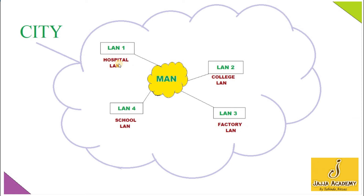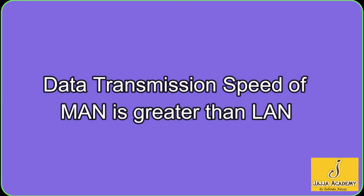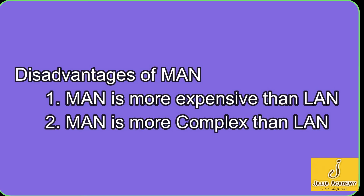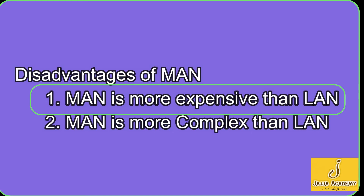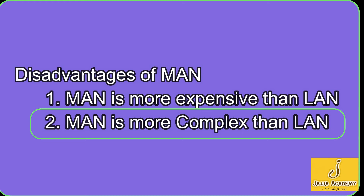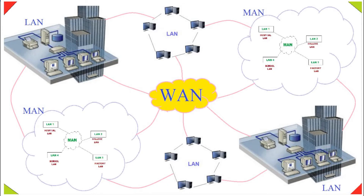So a network that covers the area of a city is called Metropolitan Area Network or MAN. In other words, MAN connects two or more LANs together which are located in a city. A real-time example of MAN is a cable TV network in a city. The data transmission speed of MAN is greater than LAN, but it is more expensive than LAN and more difficult to maintain.